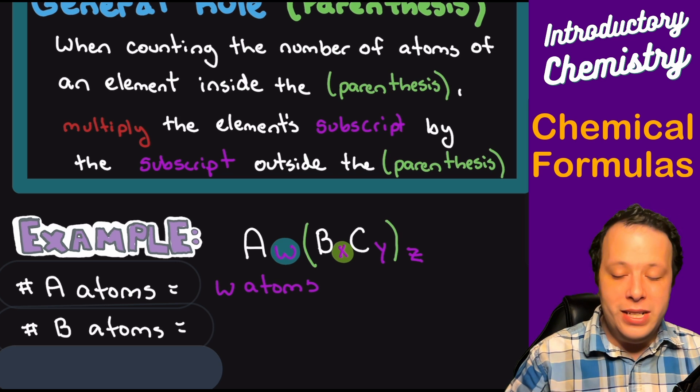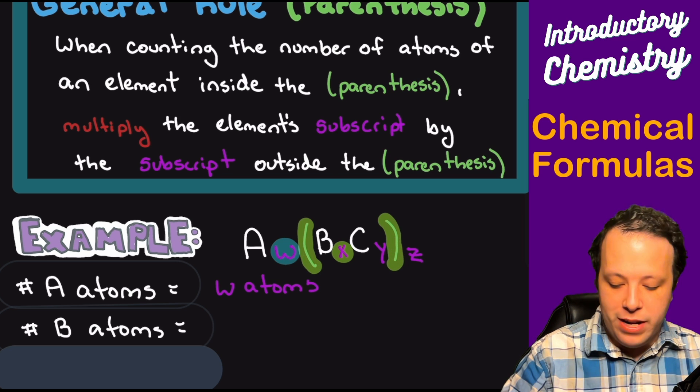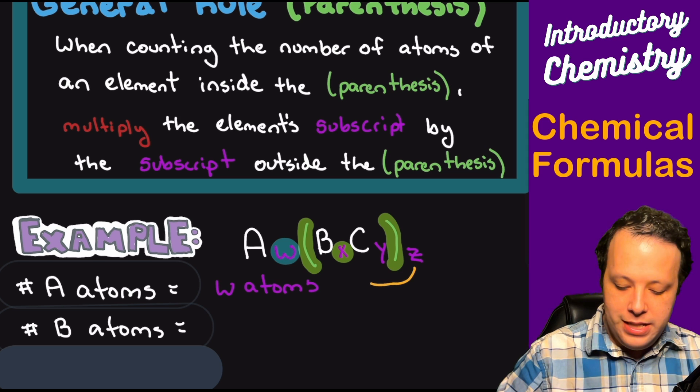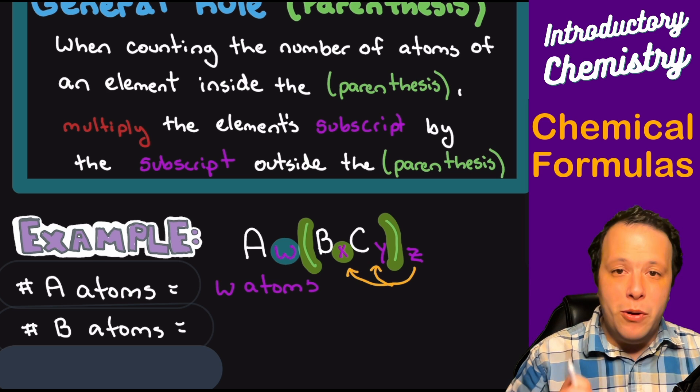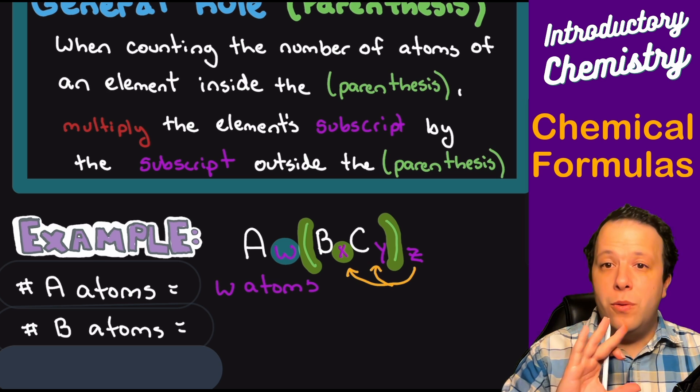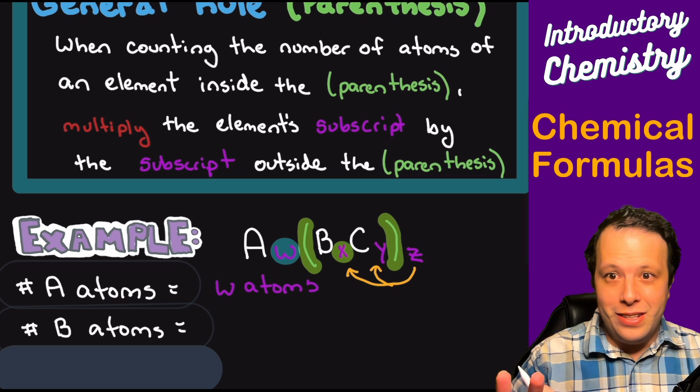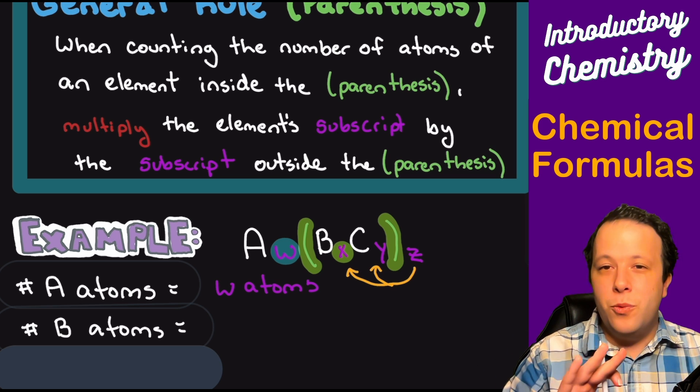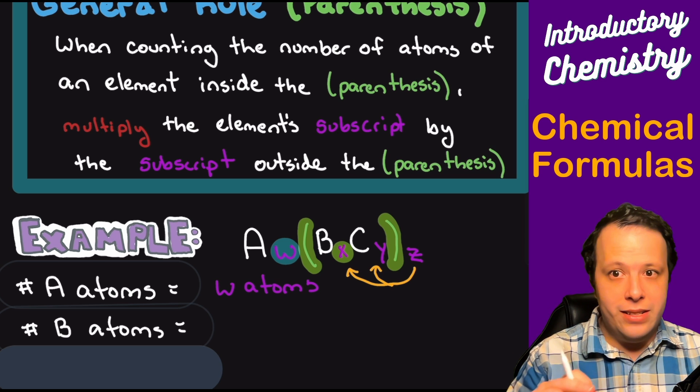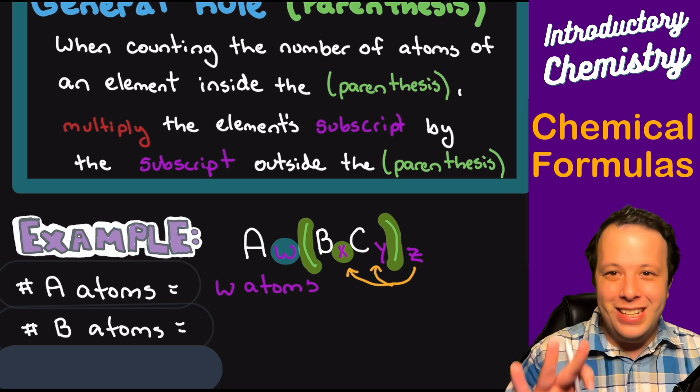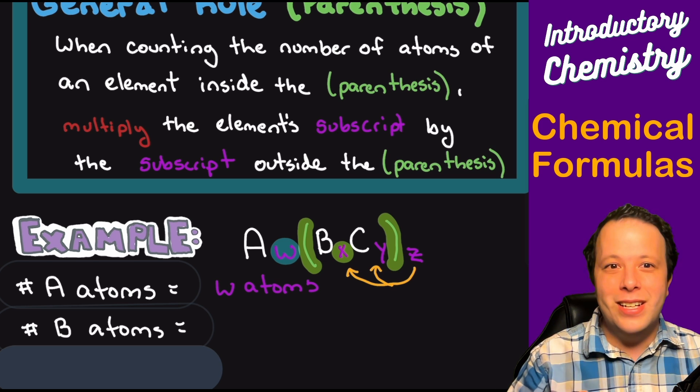What about B? Okay, so B has the subscript of X next to it, but notice that it's inside of these parentheses. So how does that exactly work? Z is going to distribute itself to both of these species. Now, when we are writing formulas, you do not carry this out like a normal math problem. We're just using this to count the number of atoms so you know how many there are. We leave it in its formula.